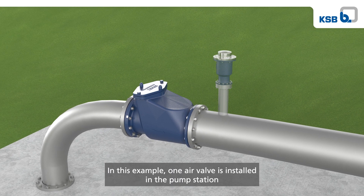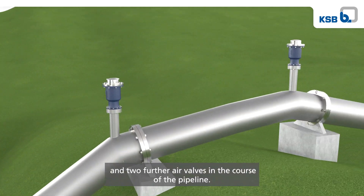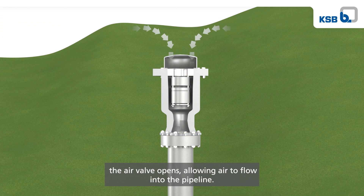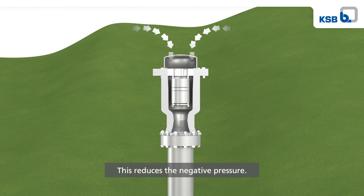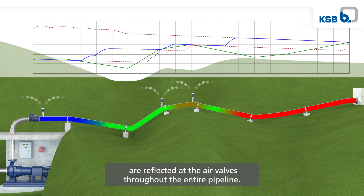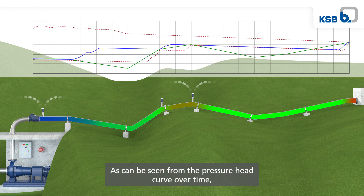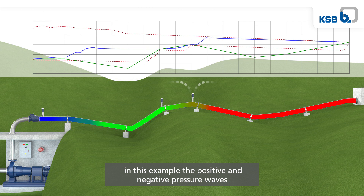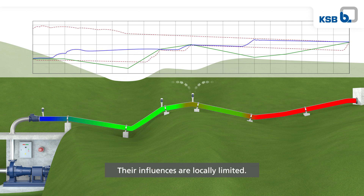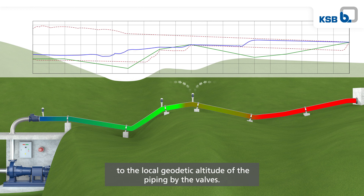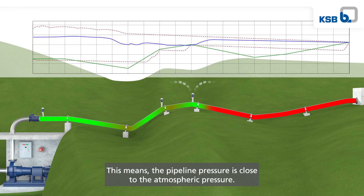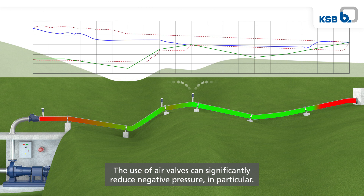In this example, one air valve is installed in the pump station and two further air valves in the course of the pipeline. In the case of negative pressure, the air valve opens, allowing air to flow into the pipeline, which reduces the negative pressure. The positive and negative pressure waves of the pressure head curve are reflected at the air valves throughout the entire pipeline. As can be seen from the pressure head curve over time, in this example the positive and negative pressure waves run back and forth between the valves, with their influences locally limited. The pressure head curve is adjusted to the local geodetic altitude of the piping by the valves, meaning the pipeline pressure is close to atmospheric pressure. The use of air valves can significantly reduce negative pressure in particular.